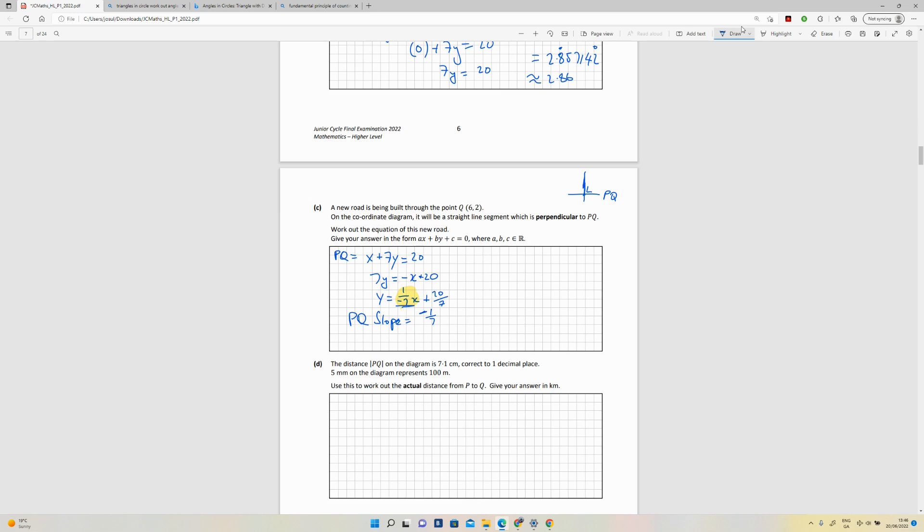Therefore, the new line, I'm going to call this NL for new line. The slope is the inverse of that, which is 7 positive, so it's 7/1 and it's positive.